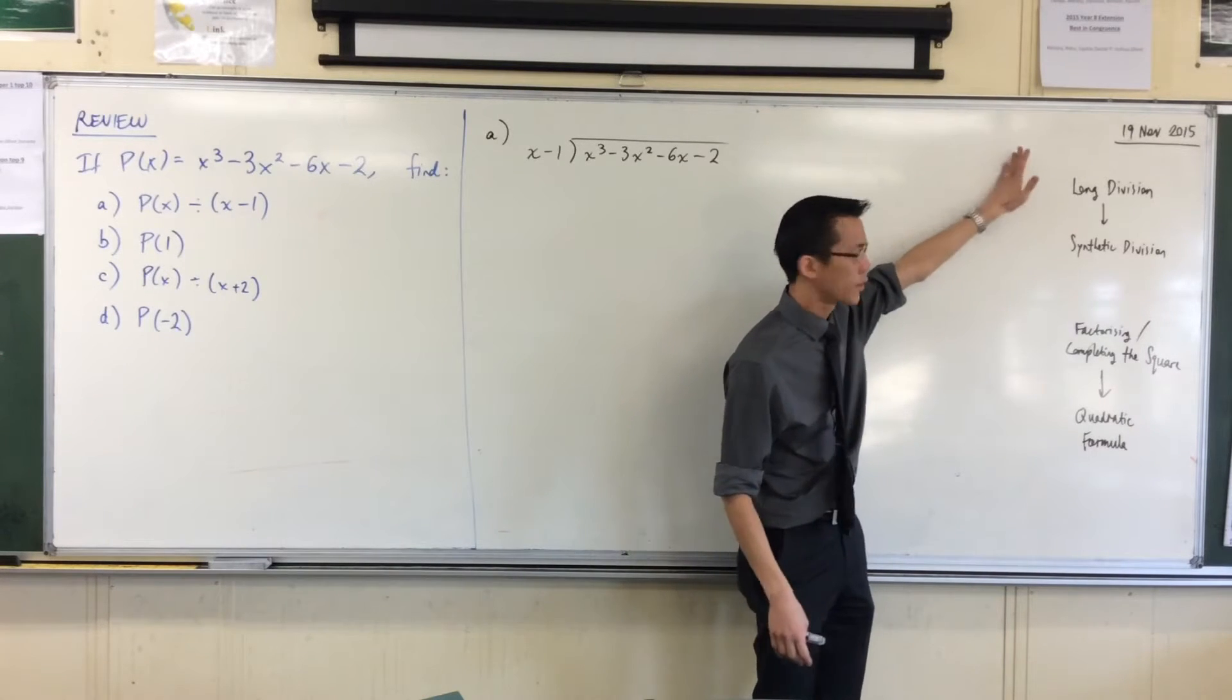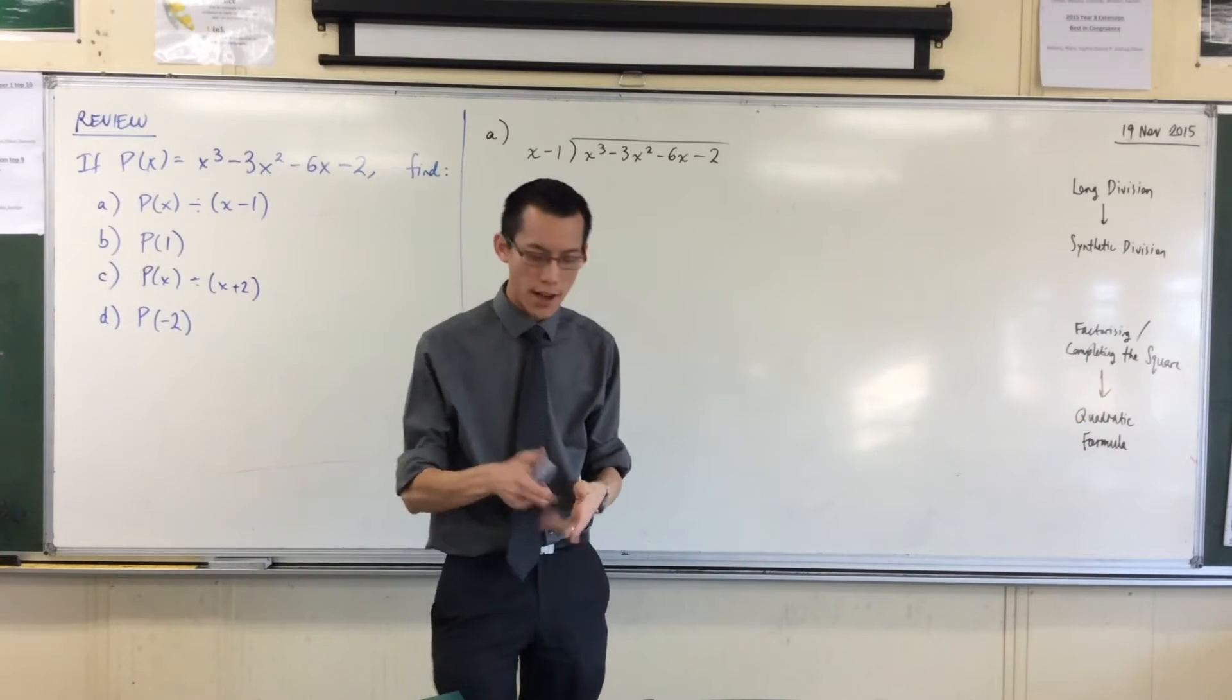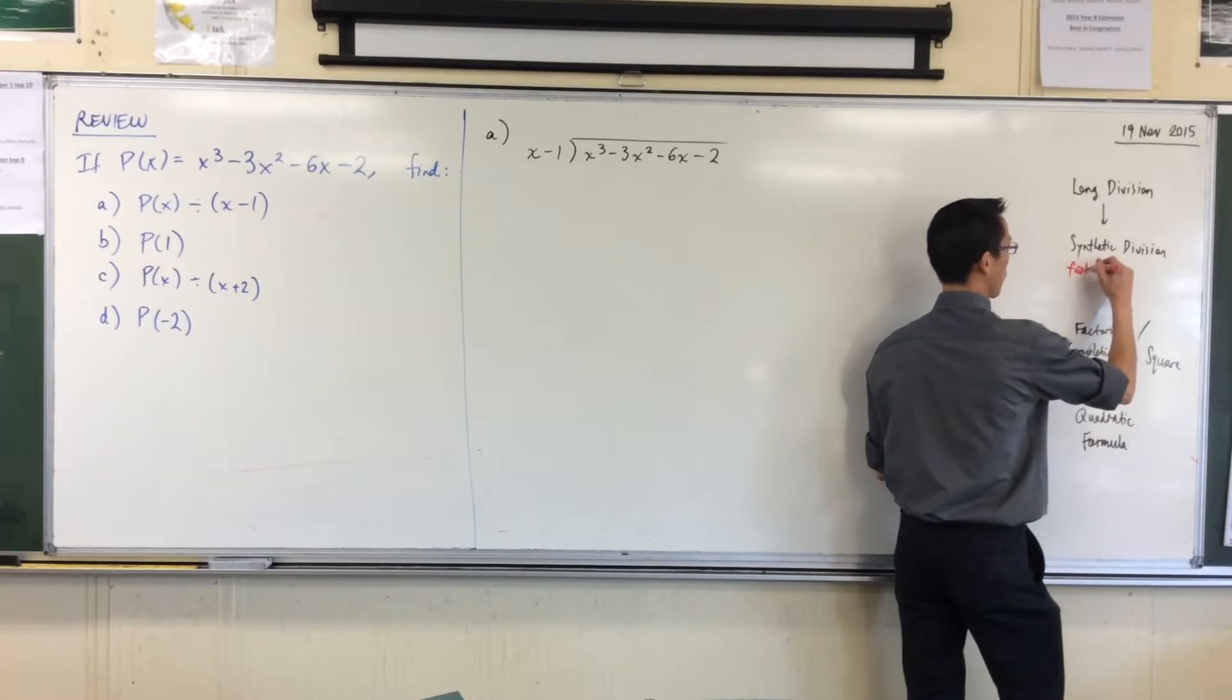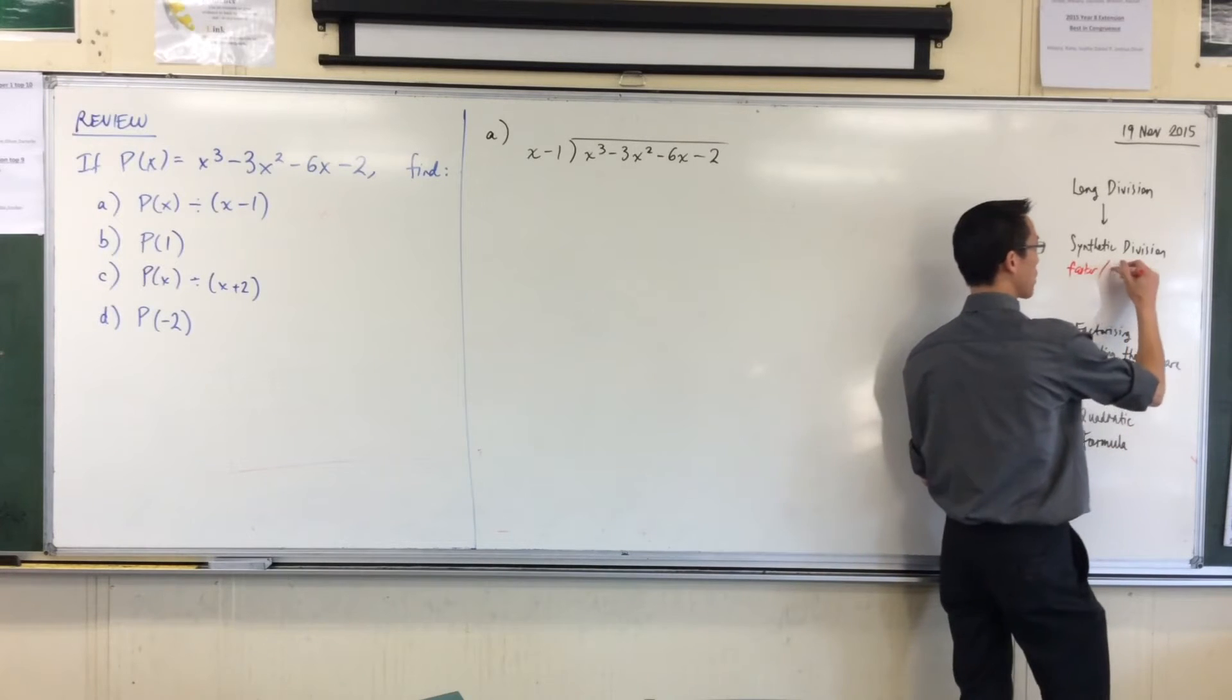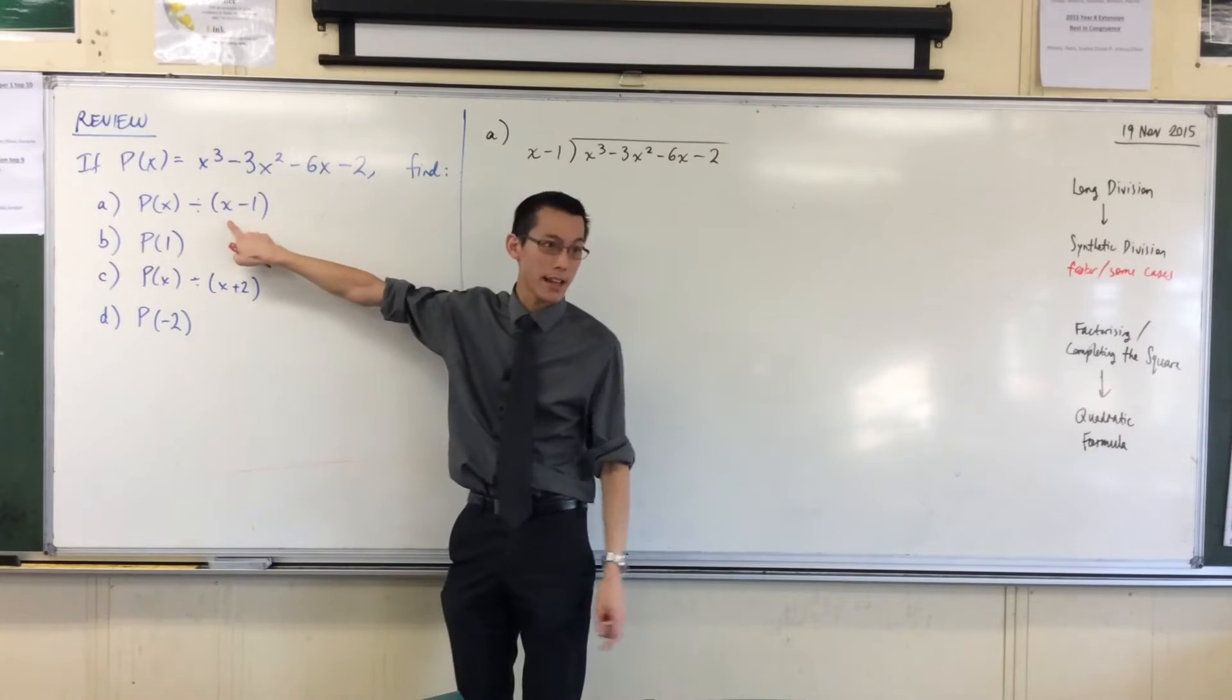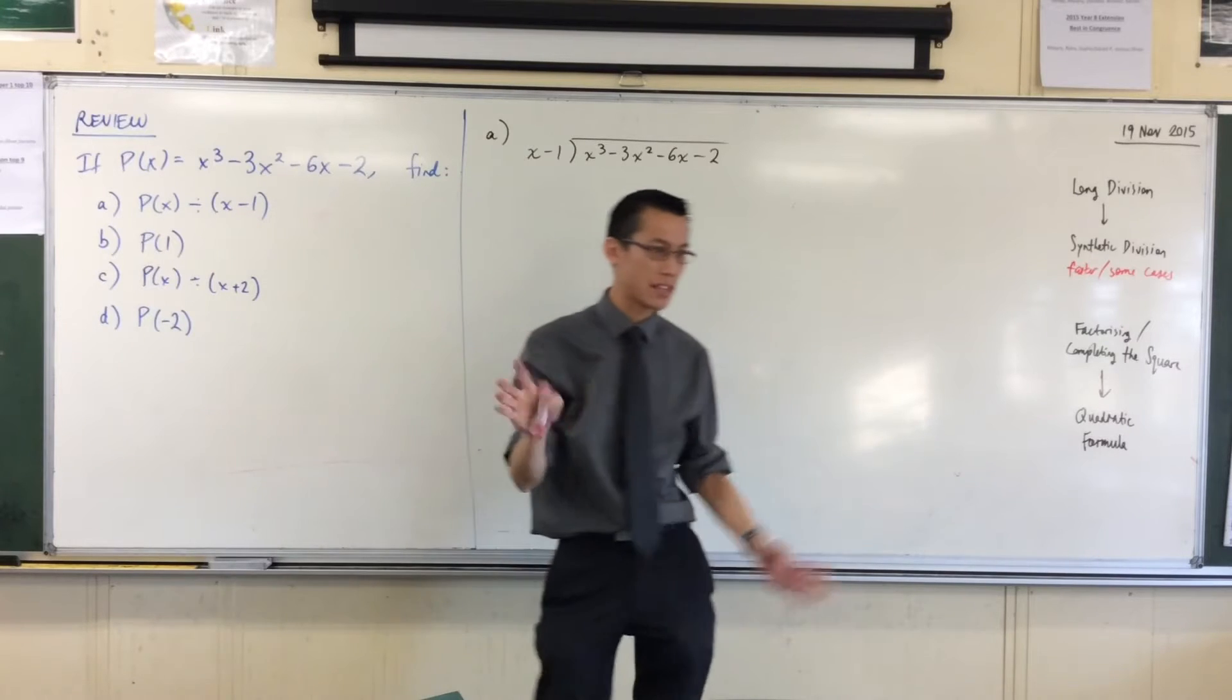When you think about long division and synthetic division, synthetic is clearly faster, but at the same time, it's also more narrow. It's faster, it's more efficient, it's less error-prone generally, but it only works in some cases. Namely, where you have divisors exactly like this. They're linear, x minus 1, and also they're monic, that number at the front of the x, the coefficient, is 1.